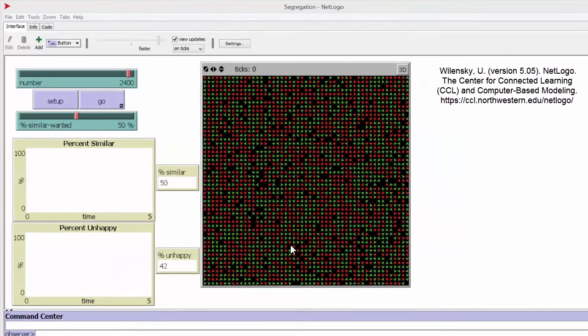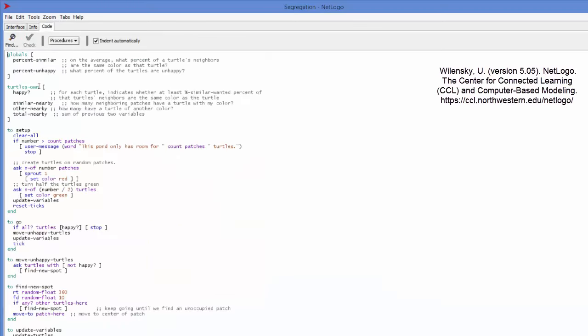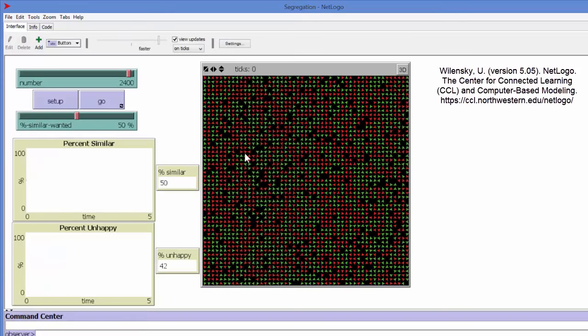Here we have our grid, our playing grid with red and green citizens. We have 2,400 citizens, and we randomly distribute them on this grid. We have the following rule: the citizens say that 50% of my neighbors should be like me. The red ones say 50% of my neighbors should be red, and the green ones say 50% of my neighbors should be green. We can see that 42% of them are unhappy. We give them one simple rule: if you're unhappy, move to the next free space and then reevaluate your situation.